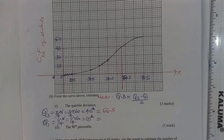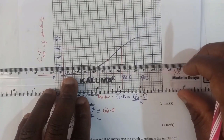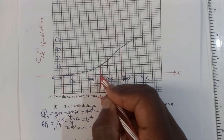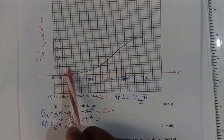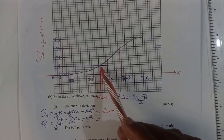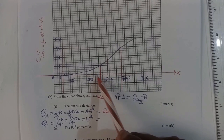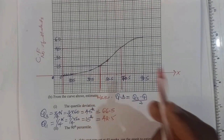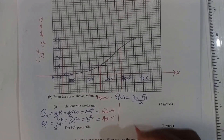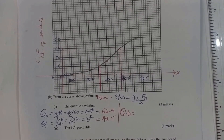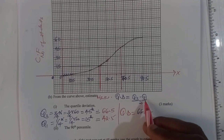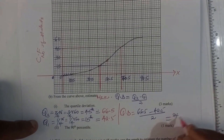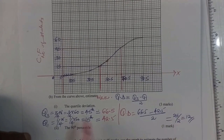Now get Q1, the lower quartile: Q1 = 1/4 × 60 = 15. The 15th student gives us the lower quartile. Draw a straight line from the 15th position up to the curve, then drop down. Reading from 40.5, one small square is 2, so 42.5. Therefore Q1 = 42.5. The quartile deviation = (66.5 − 42.5) / 2 = 24 / 2 = 12.